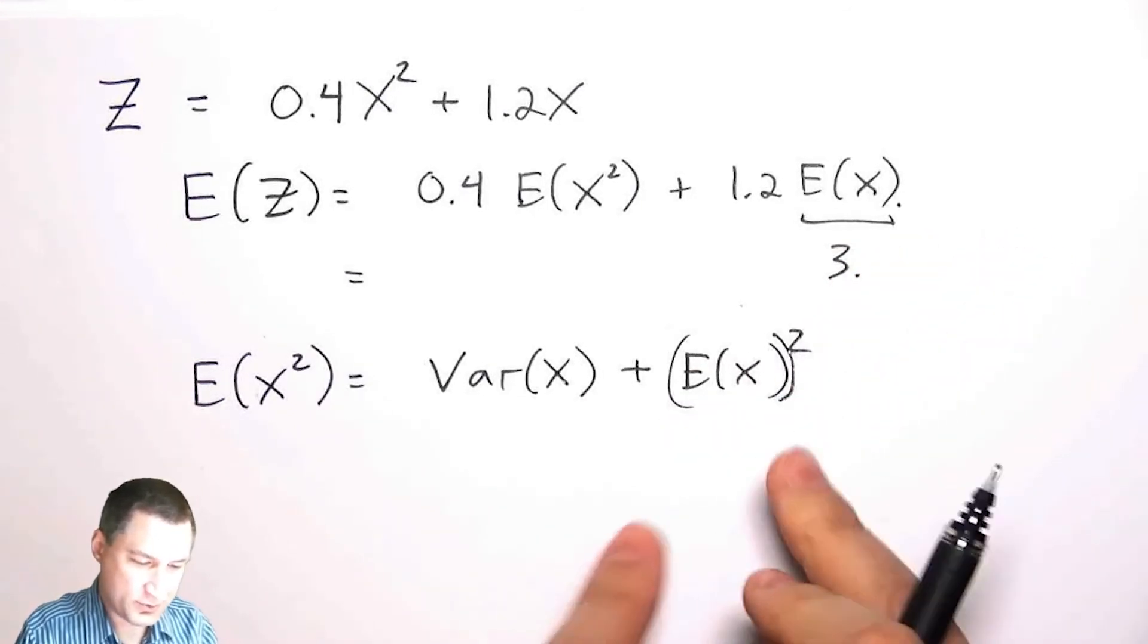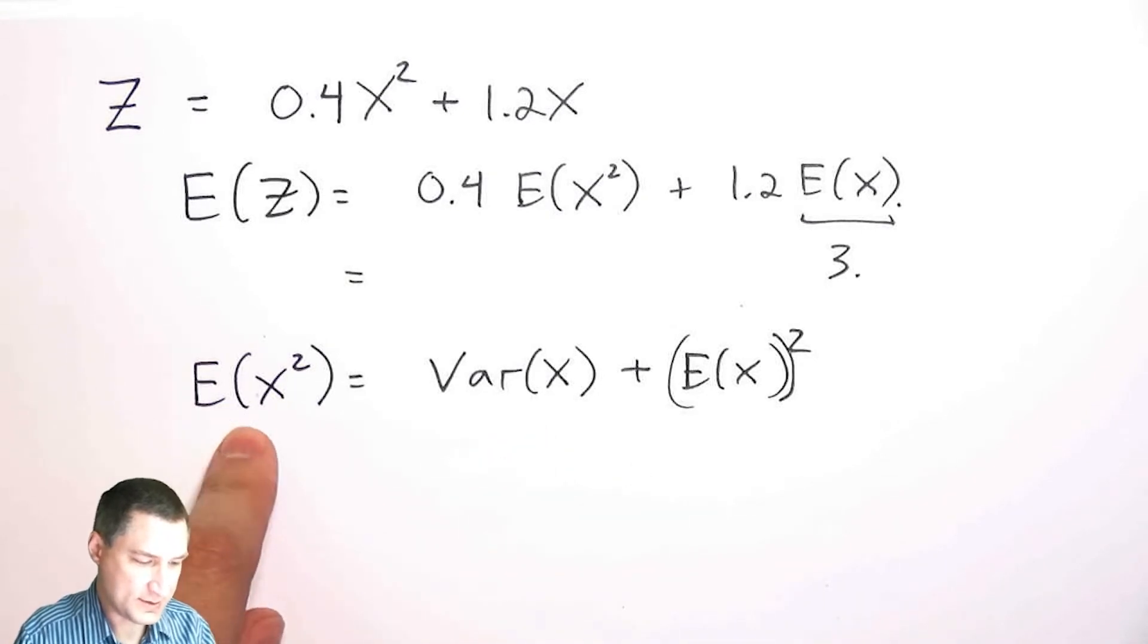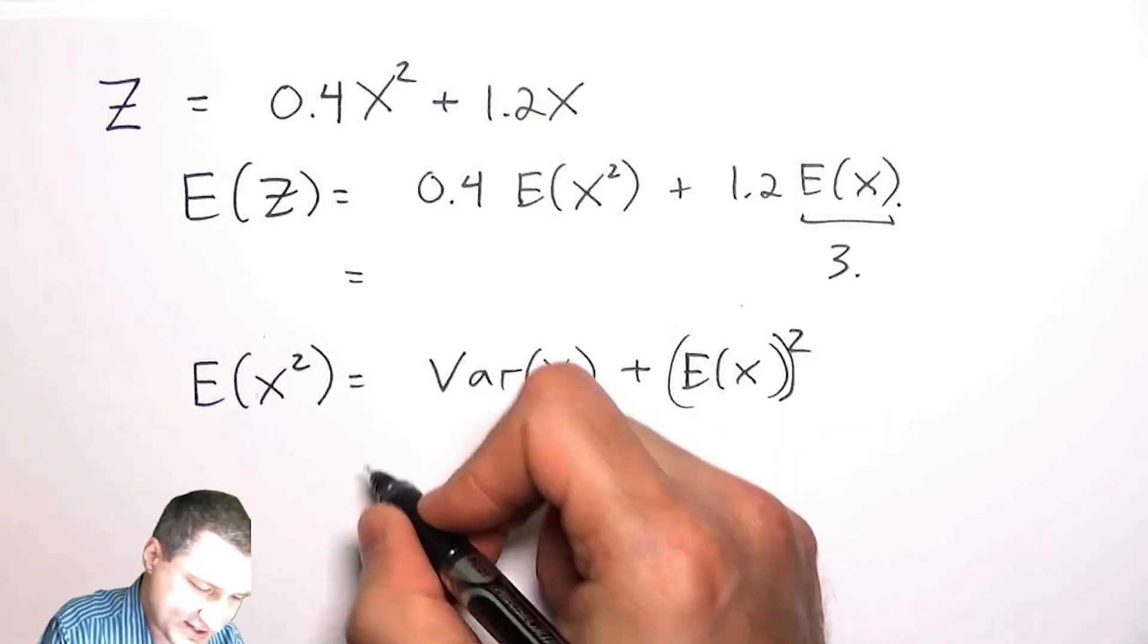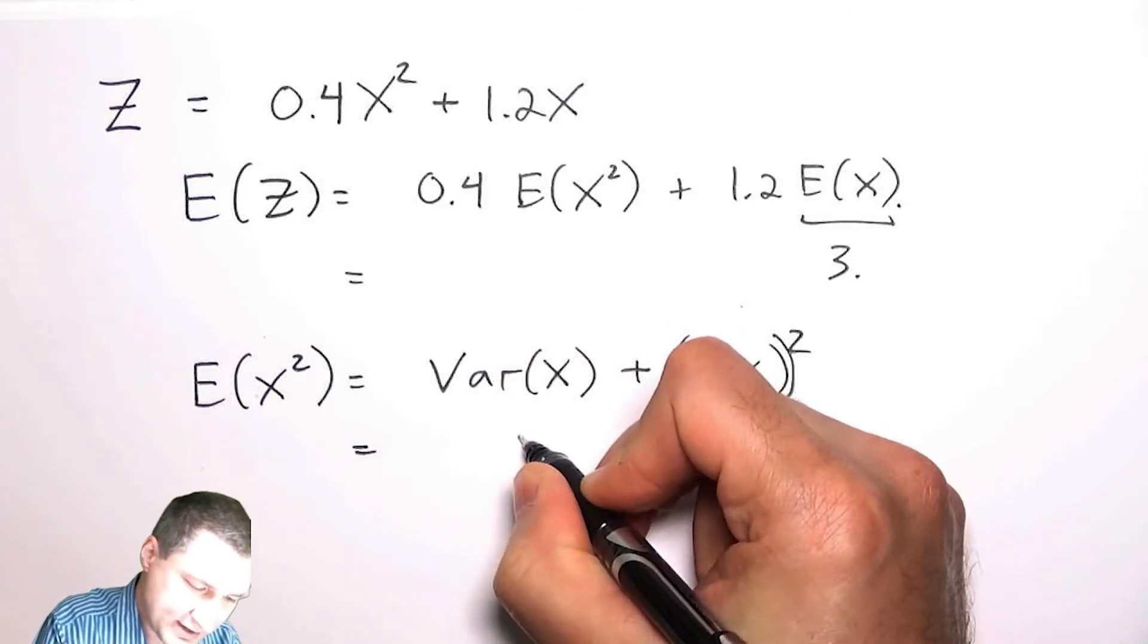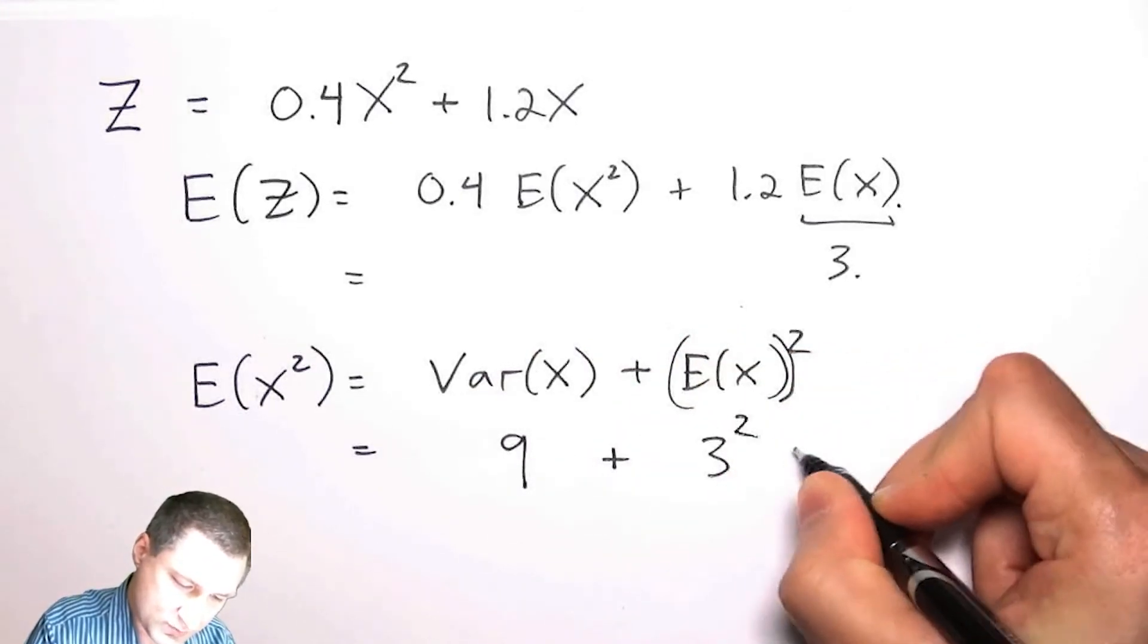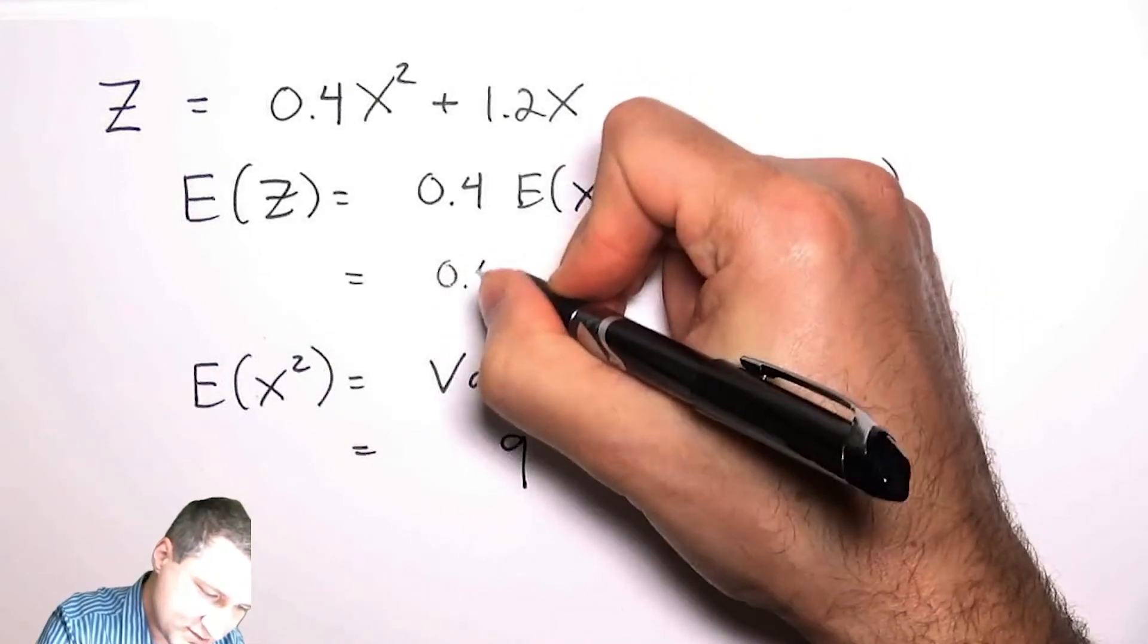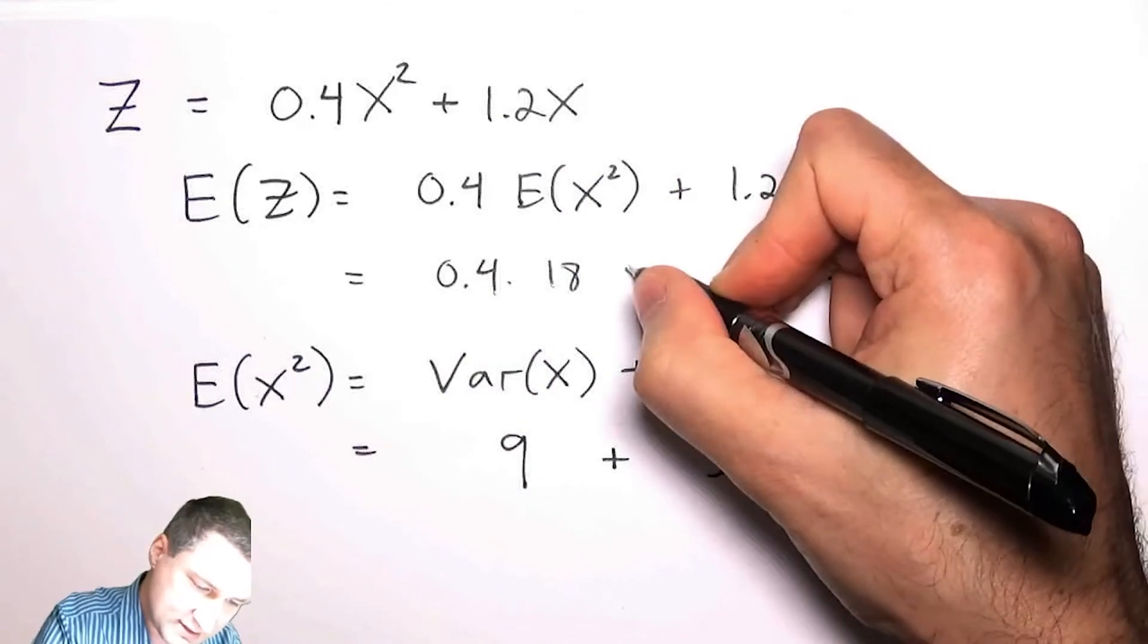If I move this over I can see this is the definition of the variance. The variance of X is E(X²) minus [E(X)]². So the expected value of X squared is 18 because Var(X) is 9 and E(X) is 3 squared. So I can say this is going to be 0.4 times 18 plus 1.2 times 3.